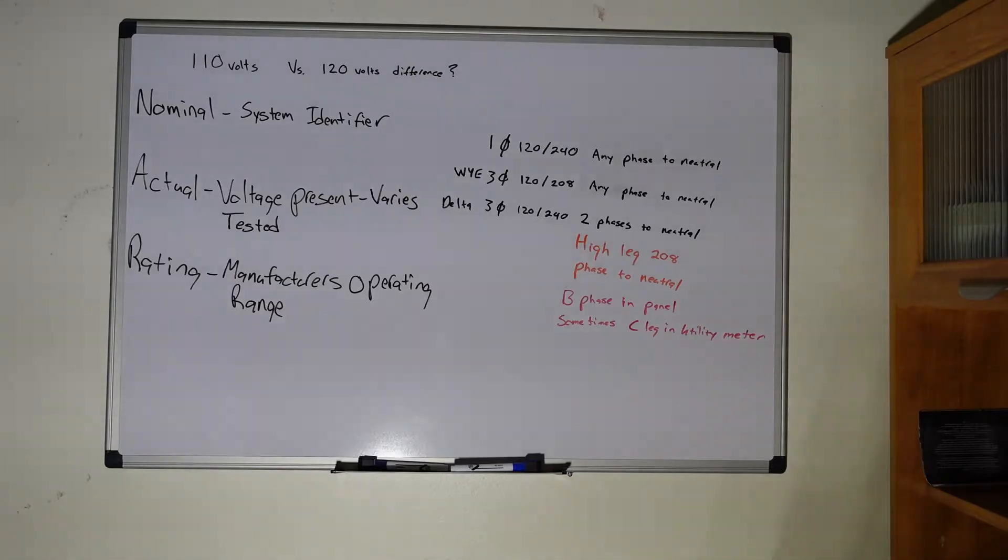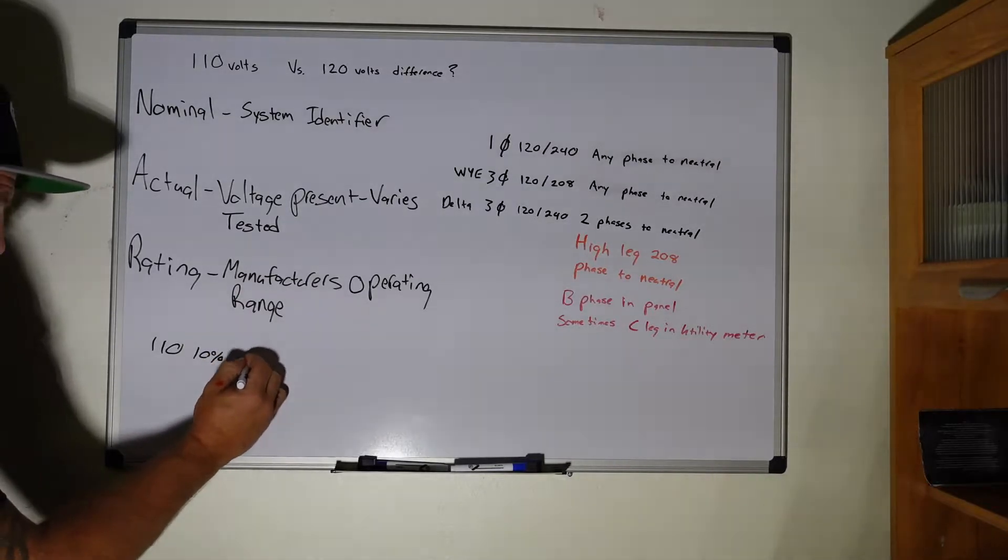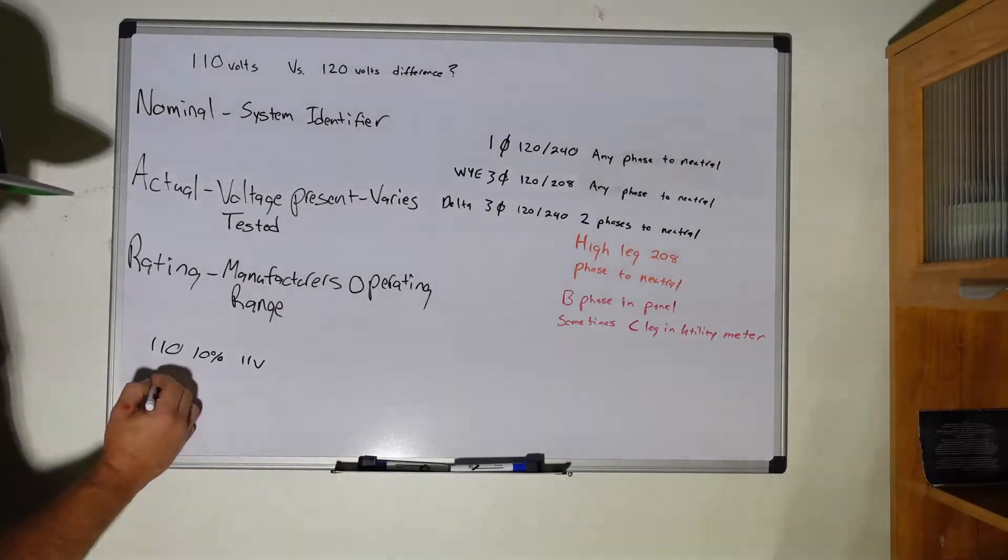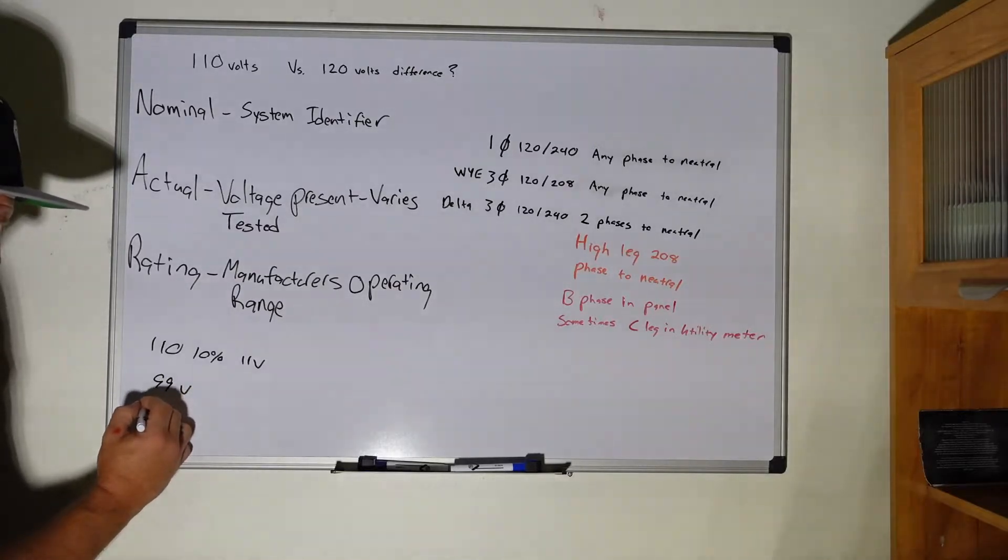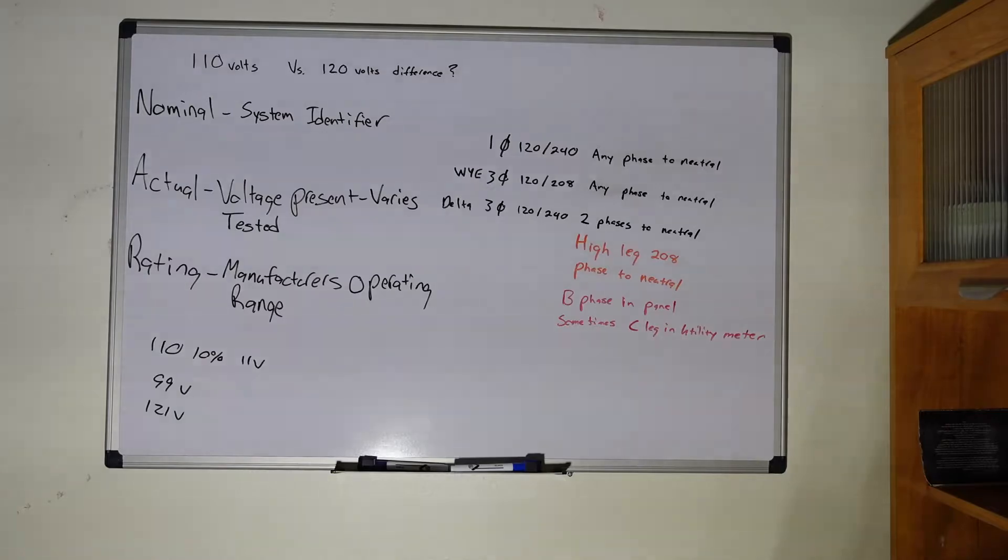So on 110, 10% of that is 11 volts, so you could get it down to basically 99 volts or as high as 121 volts. The low side is kind of bad, the high side is 121 which would still operate, but that's all that's going to change just as your actual voltage changes.